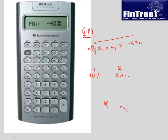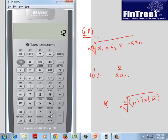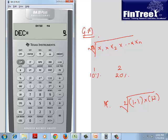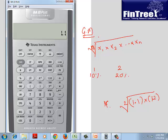To calculate geometric mean with percentages for two values: take the second root of (1 + 10%) × (1 + 20%), which is the square root of 1.1 × 1.2 = square root of 1.32 = 1.1489. Subtracting 1 gives 14.89%. The geometric mean gives the correct average return when dealing with percentages.